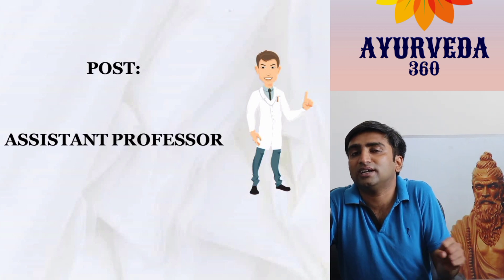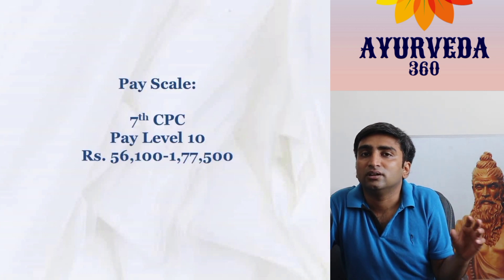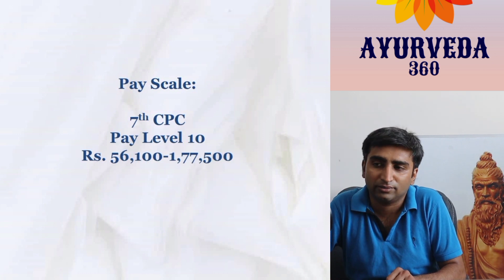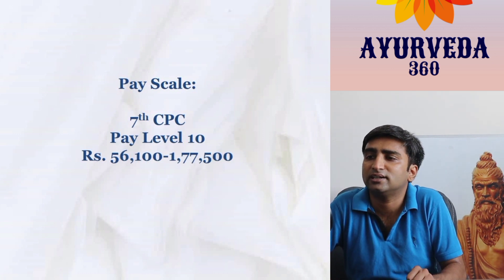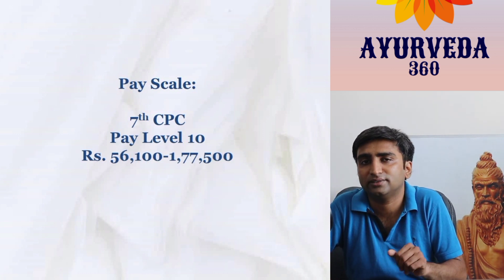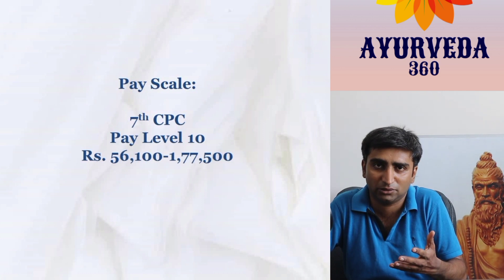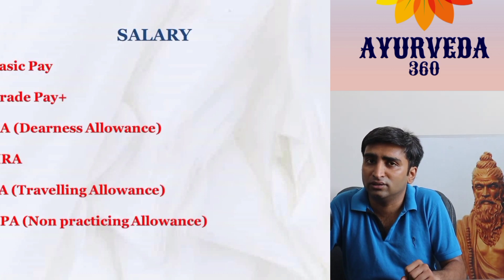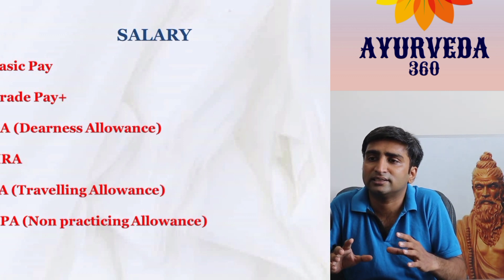The post of Assistant Professor has a pay scale of Level 10. Level 10 starts with a minimum basic of ₹56,100 and goes up to ₹1,77,000. Let's see how to calculate the exact salary of this employee.